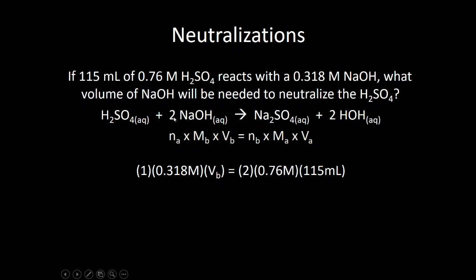And then number of moles of base here, so you look at the base and say, oh, there's a 2 in front of the base. So that's going to go down here. I know it's a base because it has the OH in it. And then the acid numbers from the problem, it's 115 milliliters. That's the volume of the acid. And it's 0.76 molar. That's the molarity of the acid. So that's how all of the numbers fit in. And this is not a hard problem to solve. You've solved problems like this many times before. Just rearrange, divide both sides by 0.318, and you'll get the answer for volume of base. In this case, it equals about 550 milliliters of base.